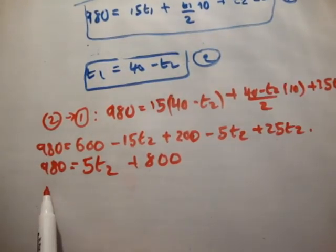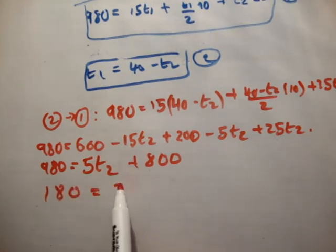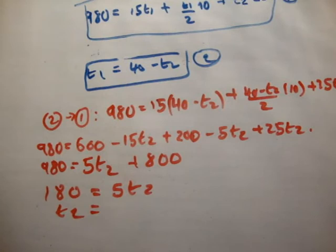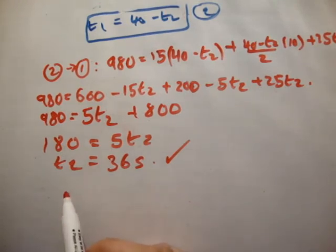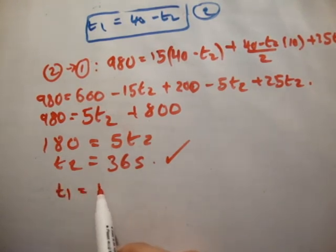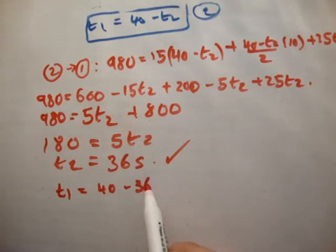So we know that 180 is equal to 5T2. T2 is equal to 180 divided by 5, which is equal to 36 seconds. Is that correct? Just let me check here. T2 is equal to 36 seconds. Correct. And we know that T1 is equal to 40 minus T2. Therefore, T1 is equal to 40 minus 36, is equal to 4 seconds. That's correct as well.